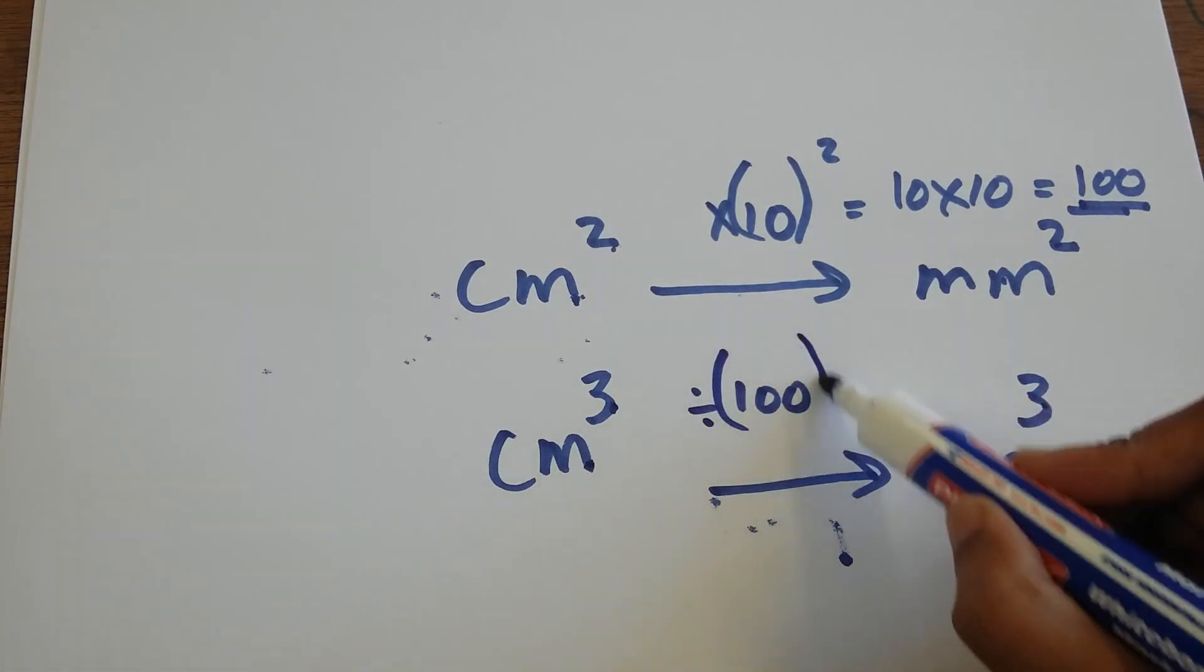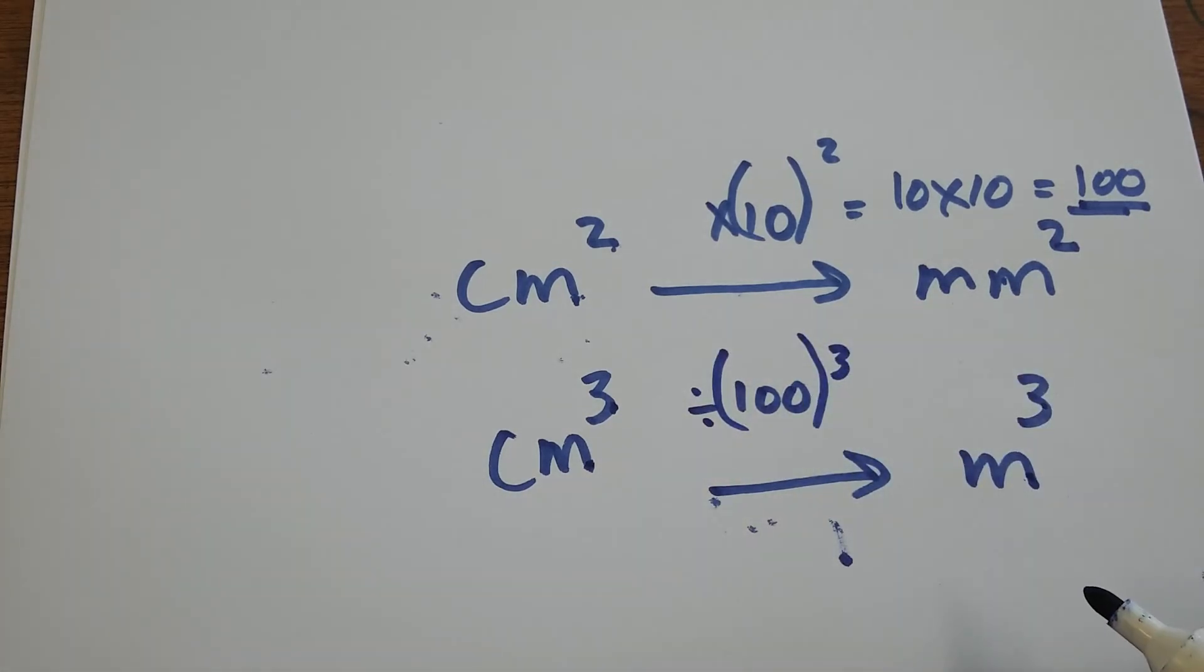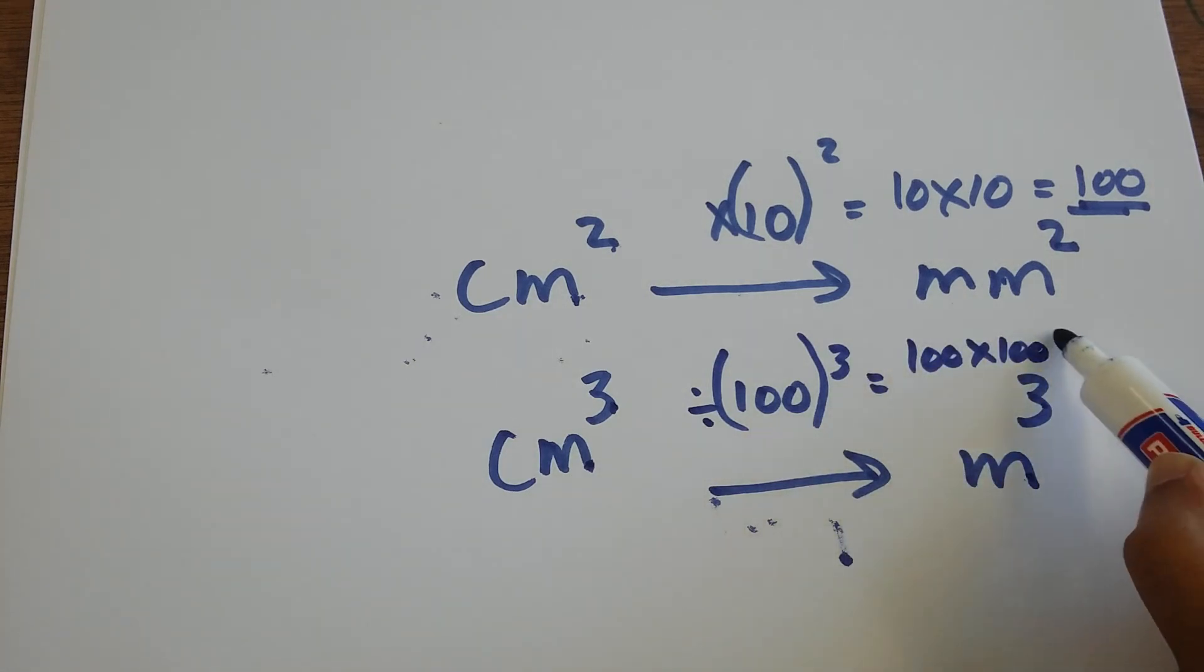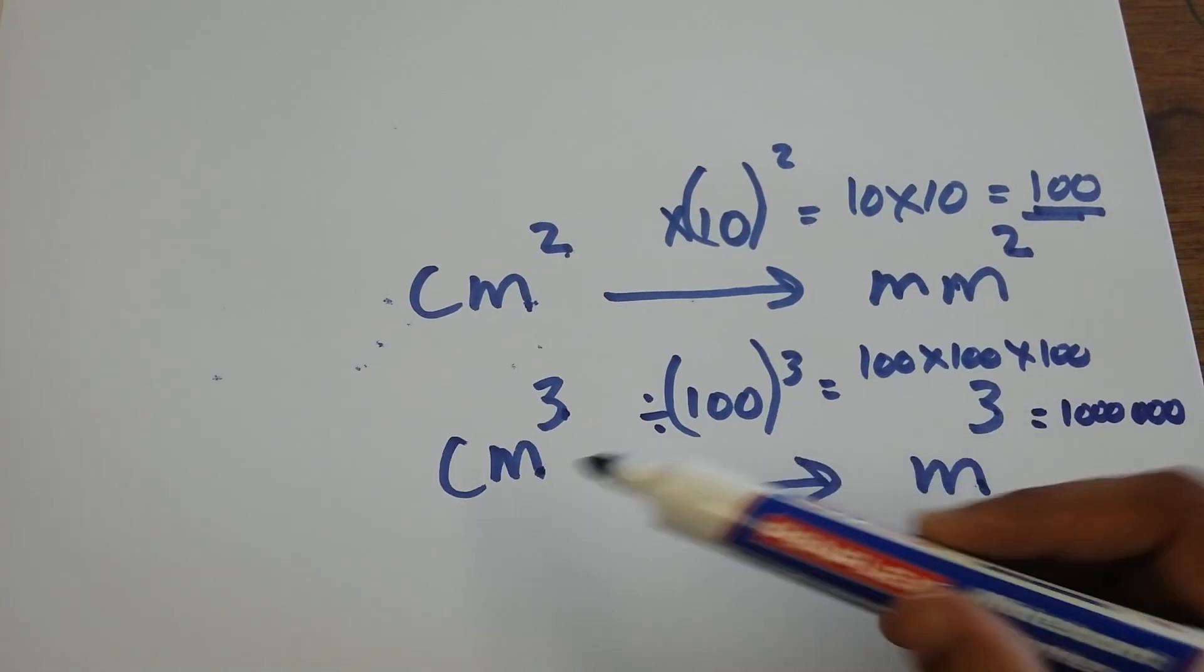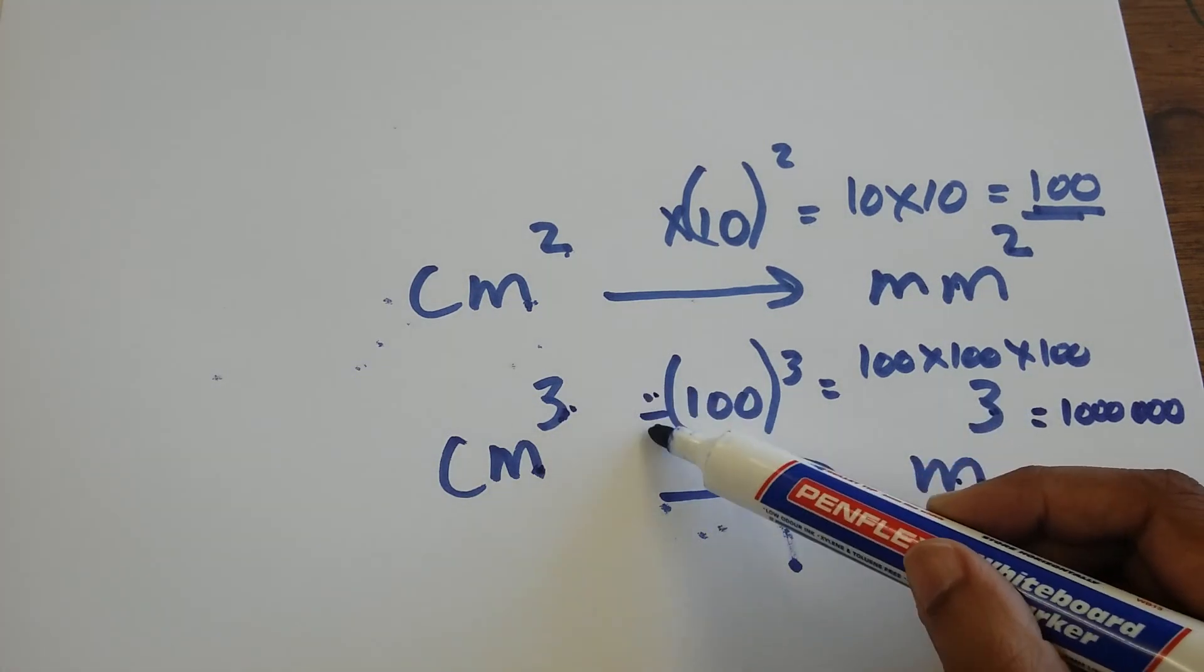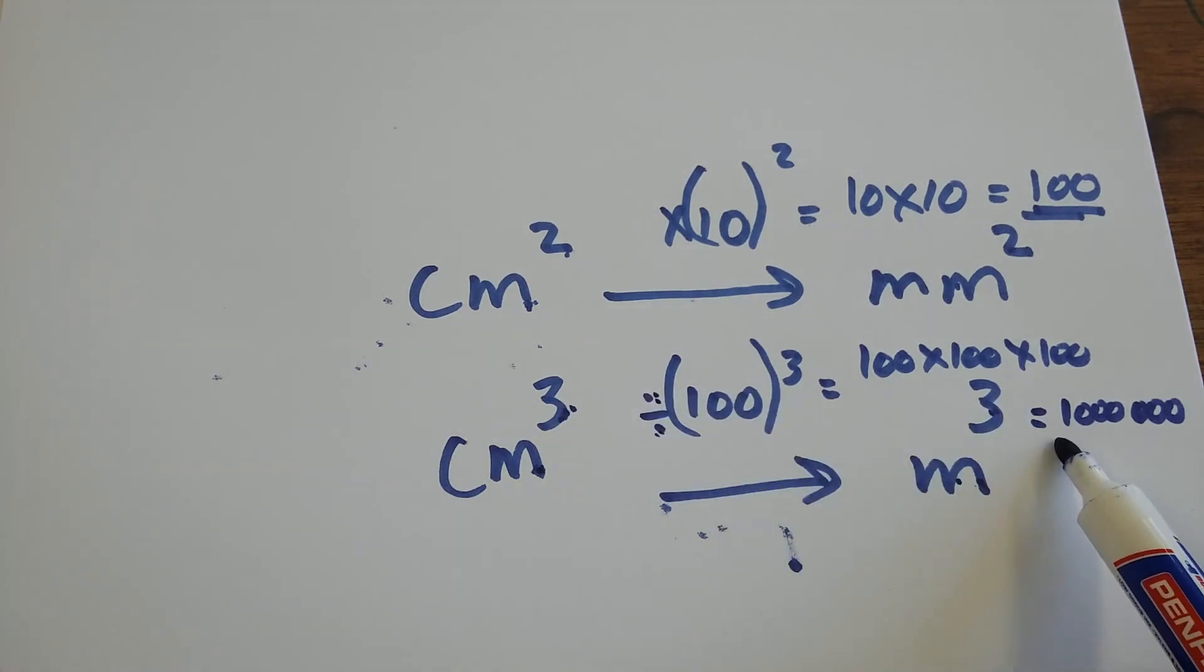I also cube the 100. So 100 cubed is the same as 100 times 100 times 100, which actually gives us a million. So when we convert from centimeter cube to meter cube, we actually divide by a million.